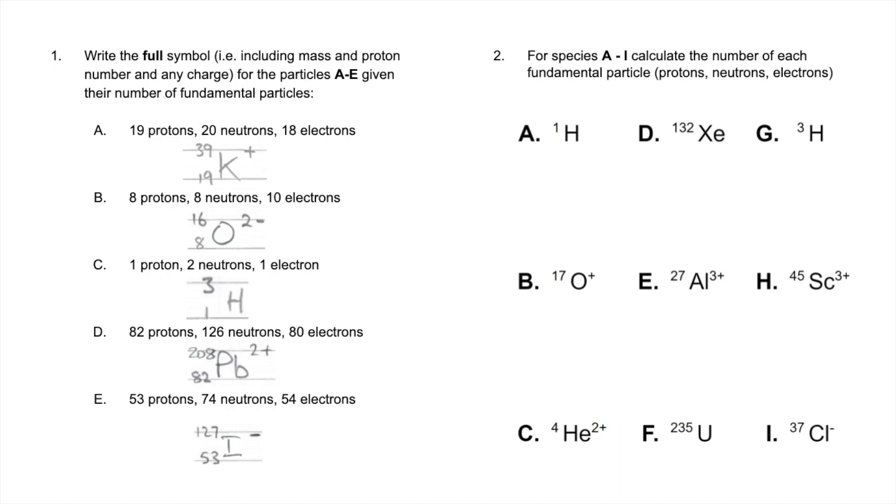OK, so for question two, it's kind of the other way around. We're given the symbol. We're given the mass number, not the proton number. And we are given the charge if it's got one.